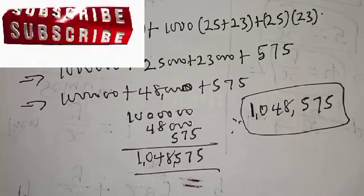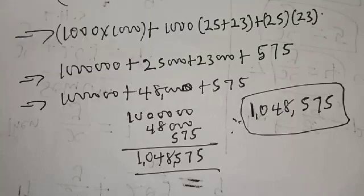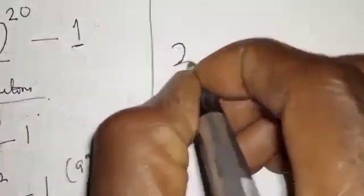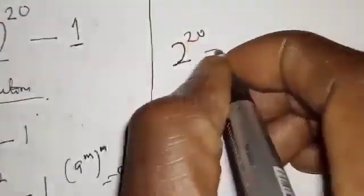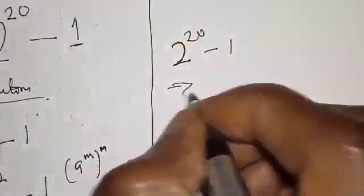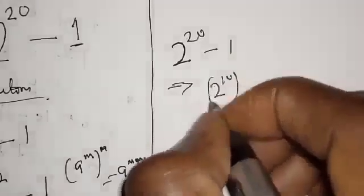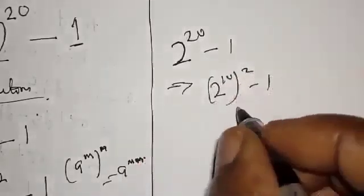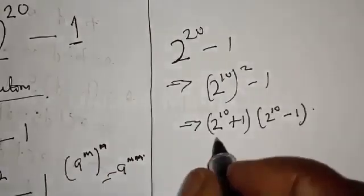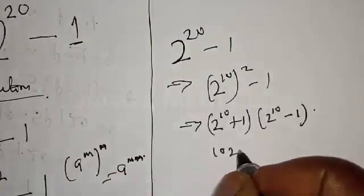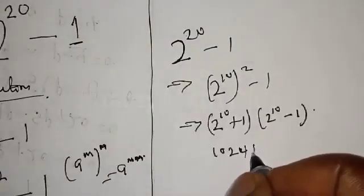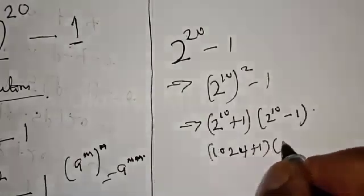Now let's calculate it in one minute. If you want to solve it within one minute, do it this way. We have 2 raised to power 20 minus one, which implies 2 raised to power 10, squared, minus one — a difference of two squares.